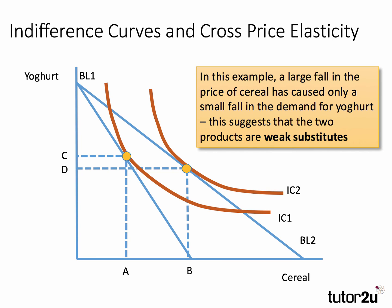In this example, a large fall in the price of cereal has only caused a small fall in demand for yogurt — we've gone down from C to D. This suggests that the cross price elasticity is positive: the price of cereal goes down, the demand for yogurt goes down, so the coefficient is positive but low. For example, a 50% fall in the price of cereal might only cause a 10% fall in the demand for yogurt, giving a coefficient of cross elasticity of just +0.2. This suggests that the two products are weak substitutes, which is probably realistic.